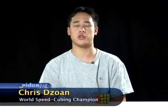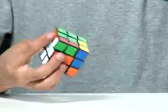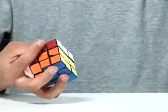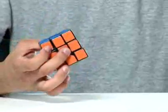Hello and welcome to Video Jug. I'm Chris Dzoan, the world speed record holder for solving the Rubik's Cube with one hand. If I can solve it one-handed in 16.36 seconds, I'm sure you can solve it with practice in under a minute with two hands.